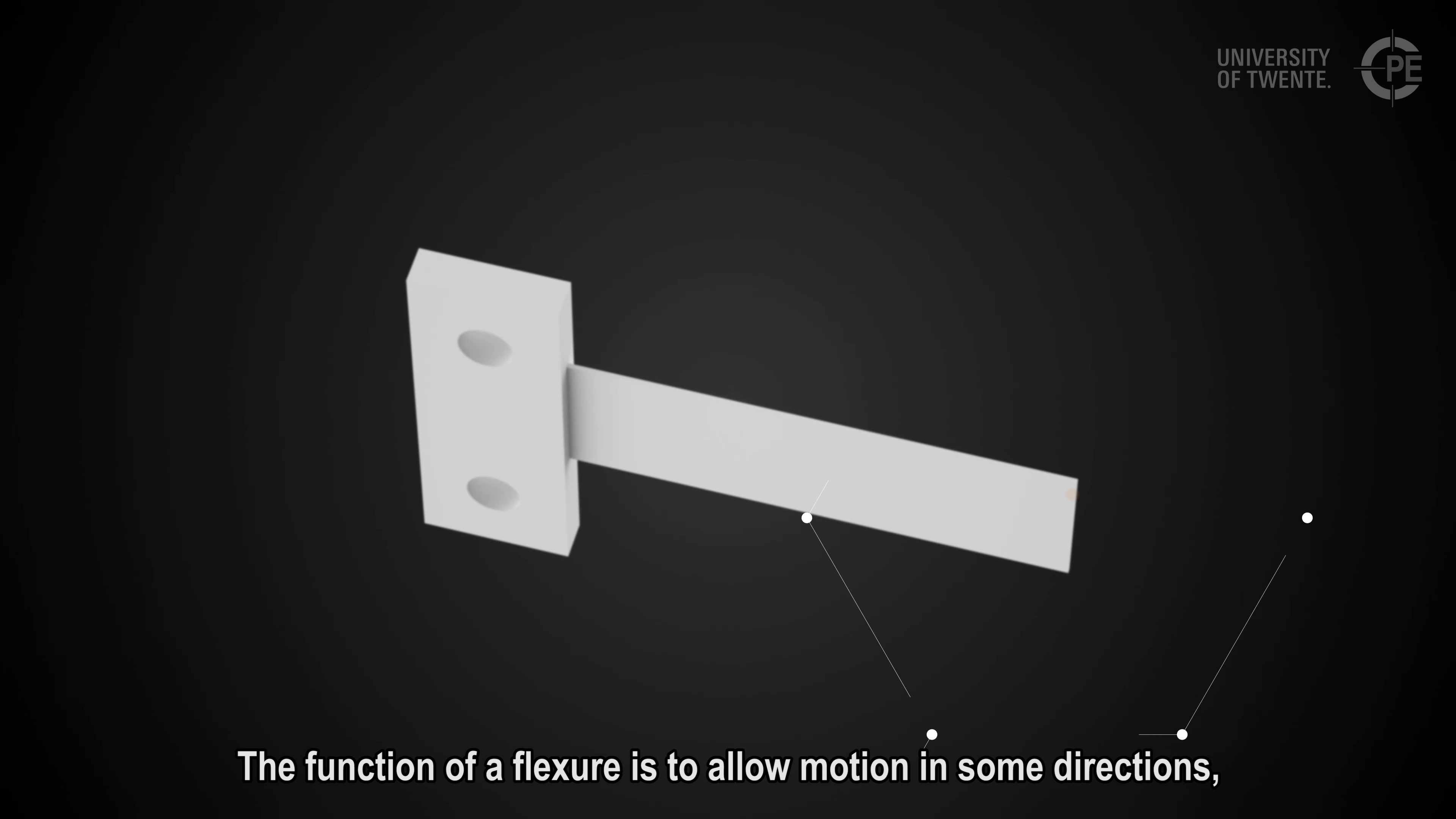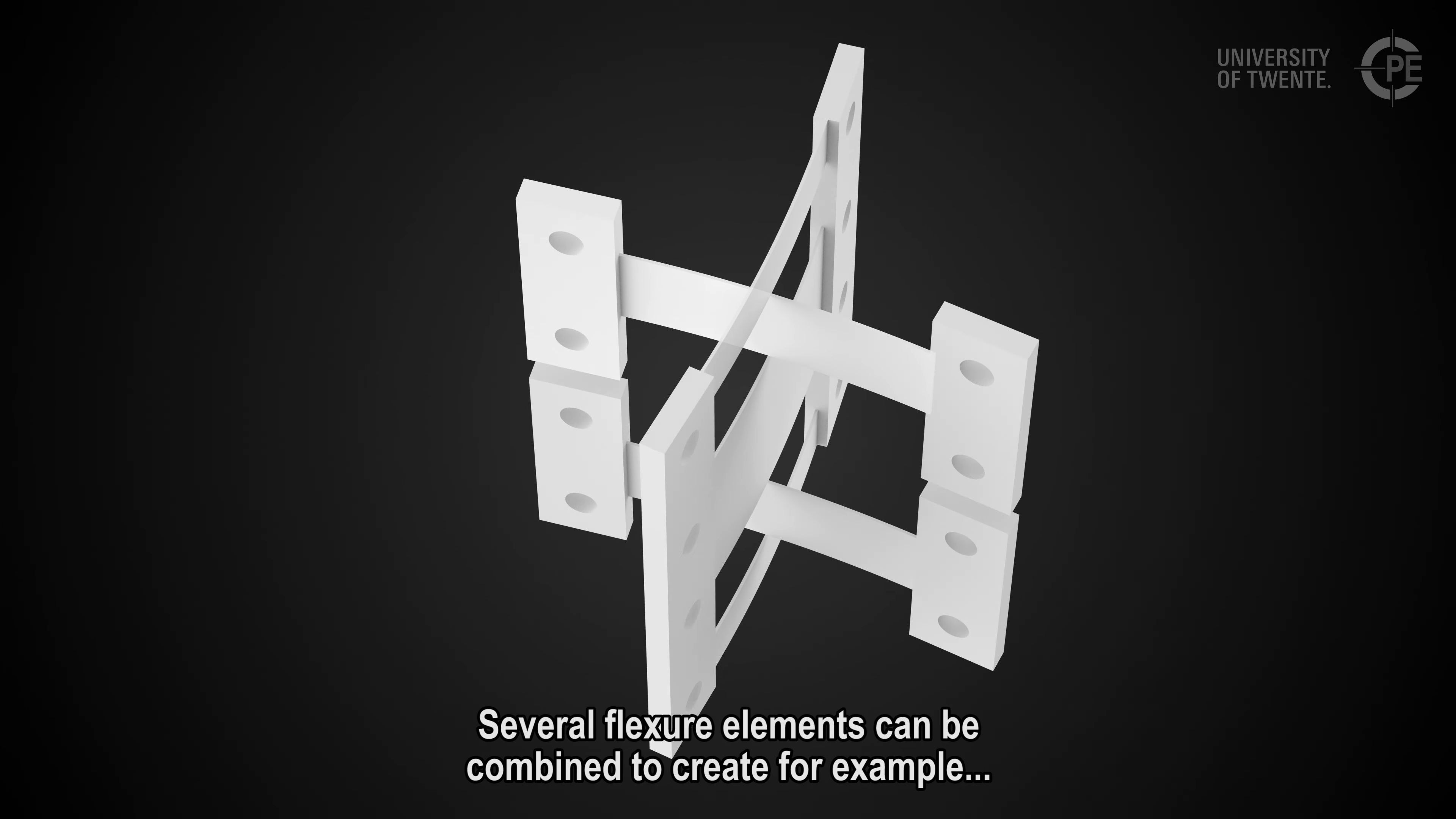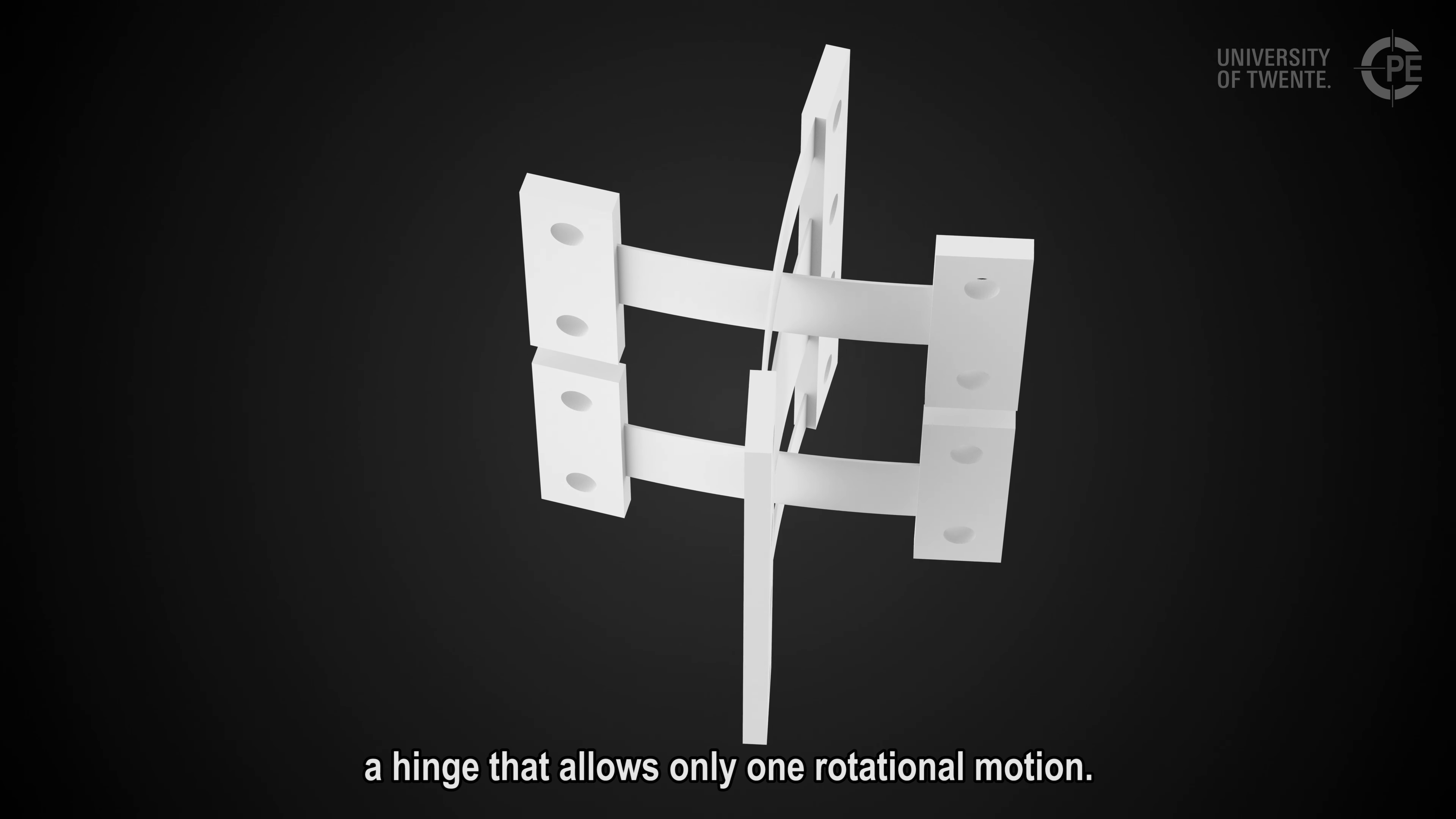The function of a flexure is to allow motion in some directions while supporting other directions. Several flexure elements can be combined to create, for example, a hinge that allows only one rotational motion.